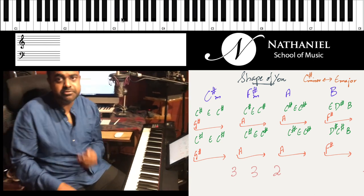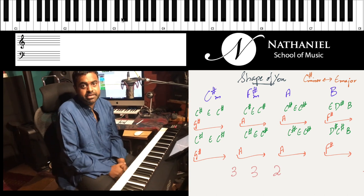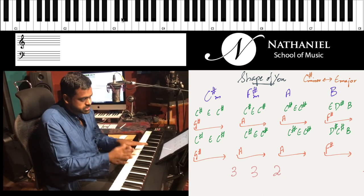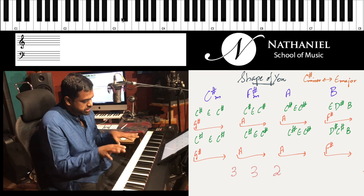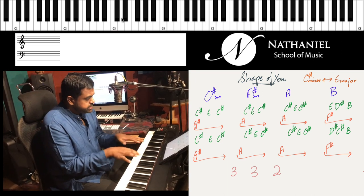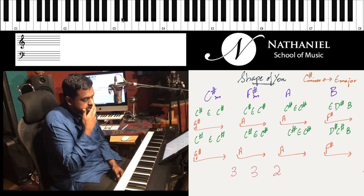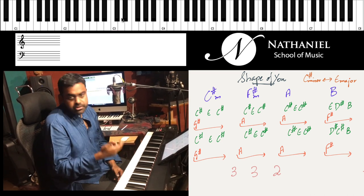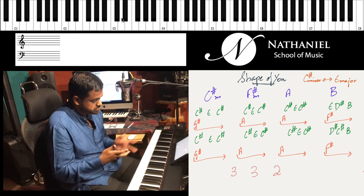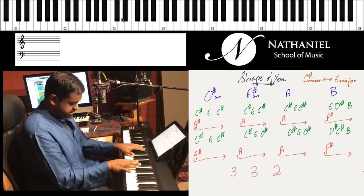Hi guys, this is Jason here from Nathaniel, and here's Shape of You by Ed Sheeran. I'm going to play it on the piano of course. Before we talk about the piano riff and that consistent hook which goes on throughout the song, we'll first look at the chords of the entire piece of music, which is basically one chord progression.